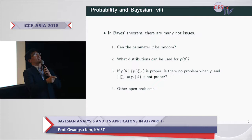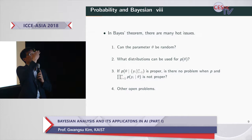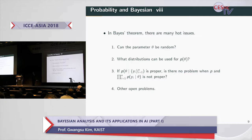Can the parameter theta be random? Bayesian says yes, theta can be random. What distribution can be used for the prior of theta? This is a very difficult question. It is a very active research area for Bayesians and Bayesian statistics.